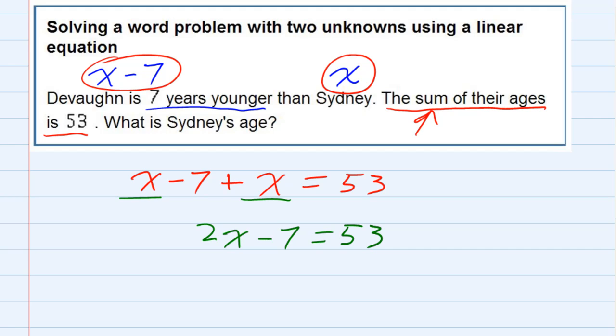And then just continue solving for x by moving the 7 to the other side. I can add 7 to both sides, and I get 2x equals 60.